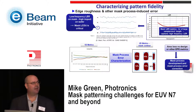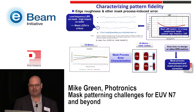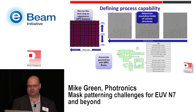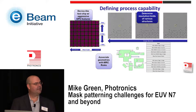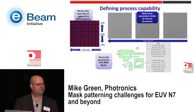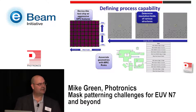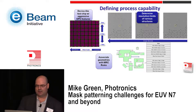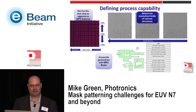To define process capability, at Photronics we designed a test chip where we shrunk and biased patterns that were notional N7 to N3 sizes with very aggressive SRAFs. We used those to determine minimum feature sizes for various structures and then associated those with specific MRC rules to define the capability of the process being evaluated. That's how the characterization was done for this study. Once you've done that and have a way to characterize pattern fidelity, you can use it to characterize the process — then ask: what do you do to improve pattern fidelity?